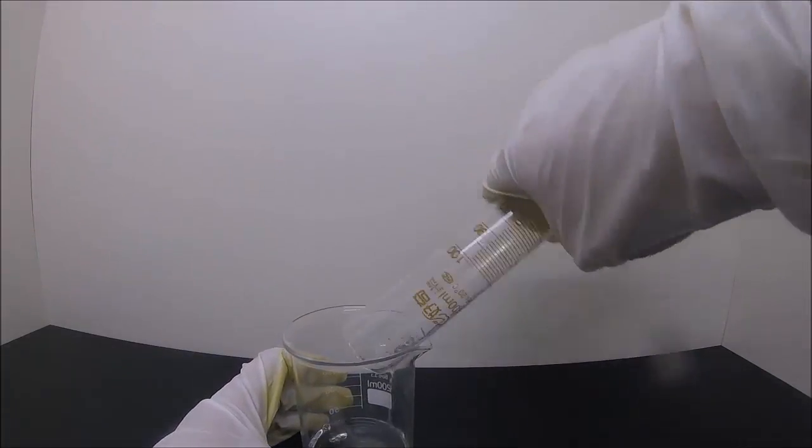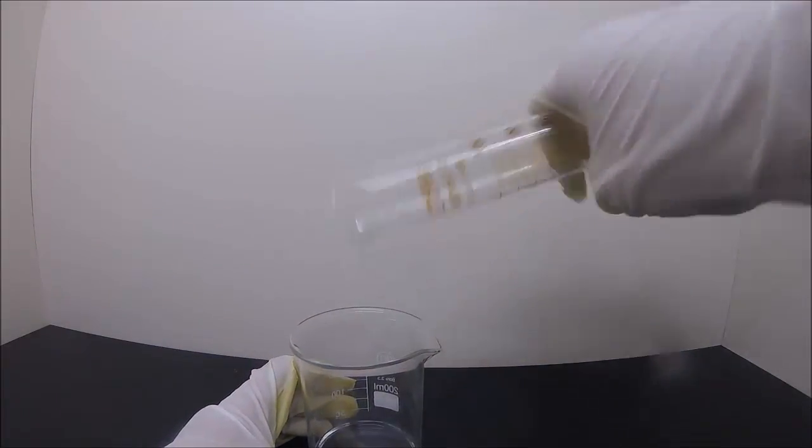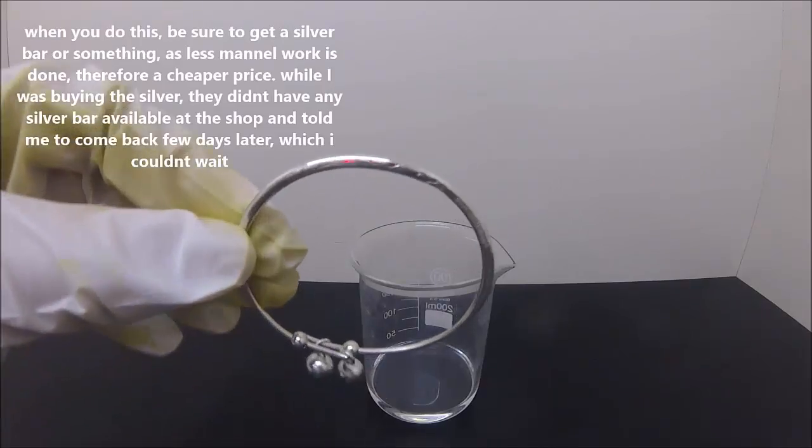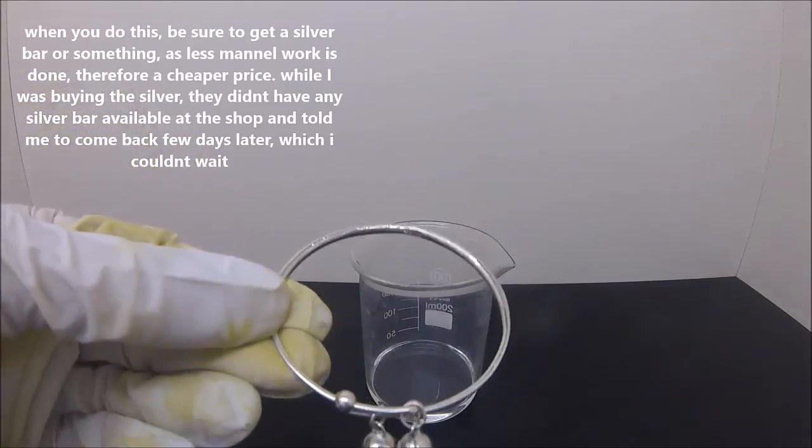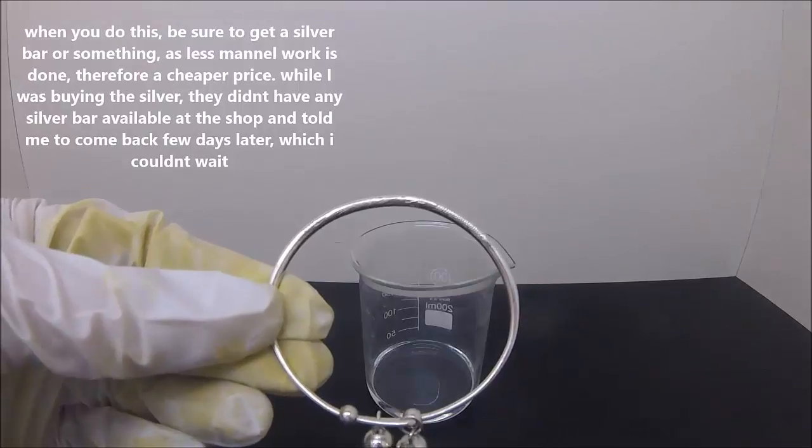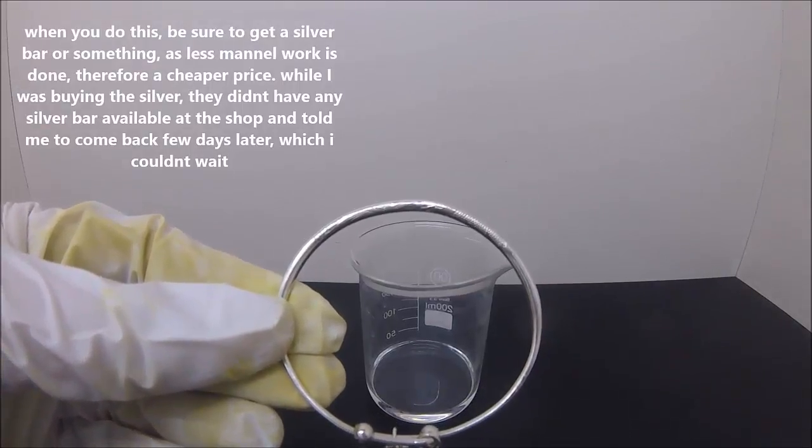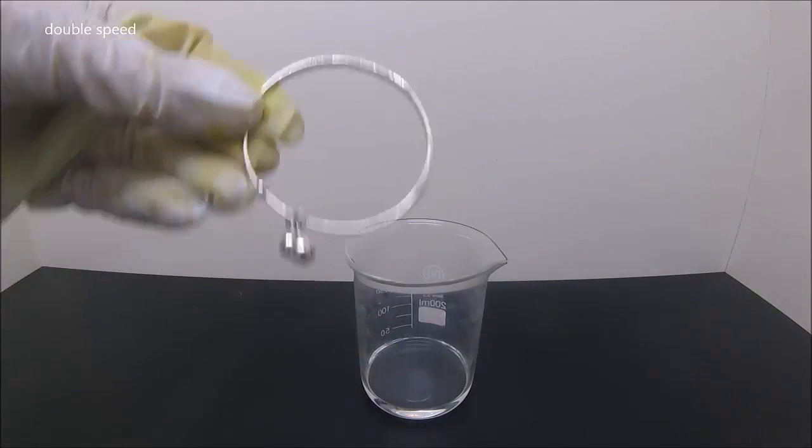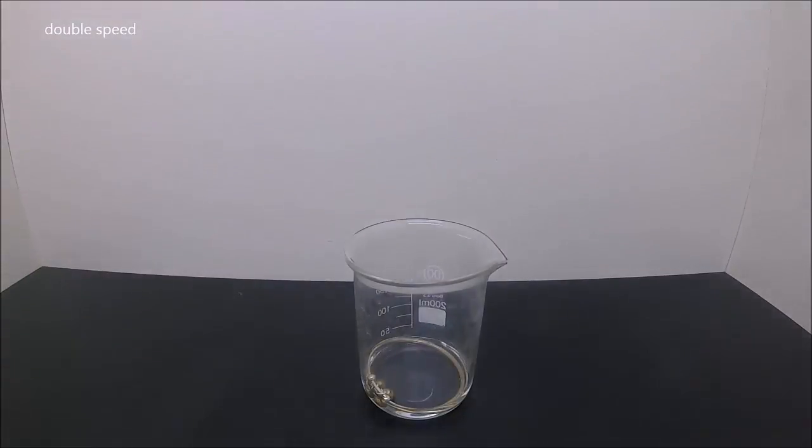Then get a beaker and pour in the acid that we prepared earlier. And here is the silver. It's a bit of a shame to destroy a piece of work like this, but some sacrifices have to be made for the sake of science. The silver is placed into the beaker and submerged in the acid.